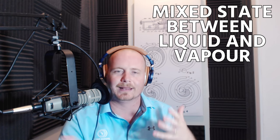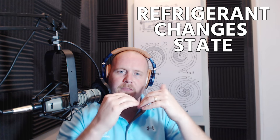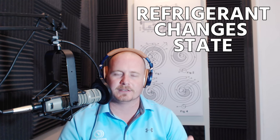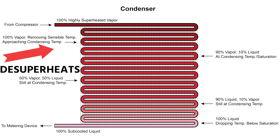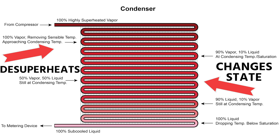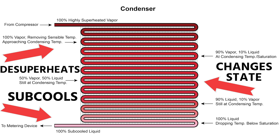Saturation is a word that many technicians misinterpret. You can look it up on the HVAC School website, which has articles and podcasts on saturation. It's the point at which the refrigerant starts to change state. In the condenser, we're changing from vapor to liquid: first it desuperheats, then it changes state — so the big center portion of the condenser is changing state from vapor to liquid — and then at the end it sub-cools, which means it drops temperature below the condensing temperature, or below saturation.